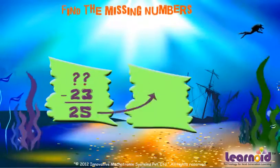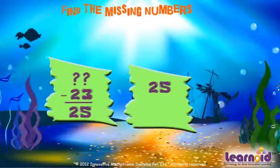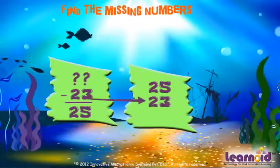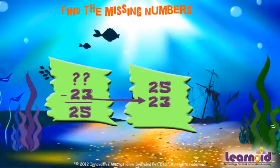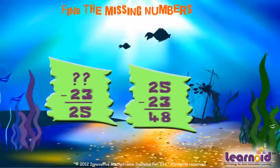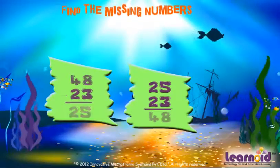Put the third number on top and the second number below it. The sum is our missing number.